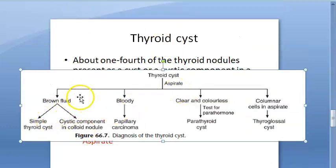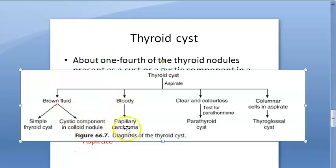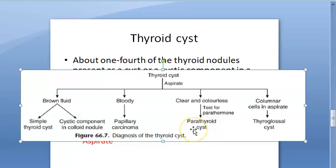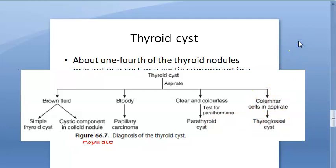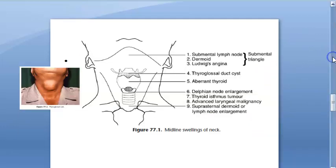If the aspirate has brown fluid, it can be a cystic component of a colloid nodule. If it is bloody, it can be papillary carcinoma. If the fluid is clear or colorless, it can be a parathyroid cyst. If you get columnar cells, it can be a thyroglossal cyst.